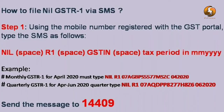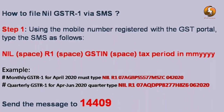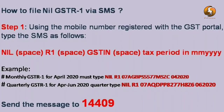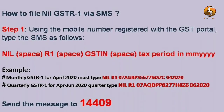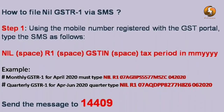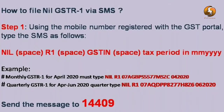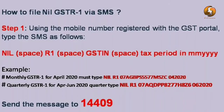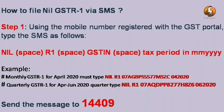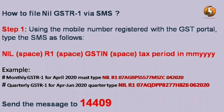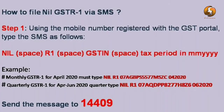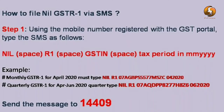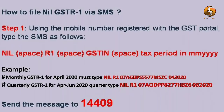For example, for April 2020, type: NIL space R1 space your GST number space 042020. If you want to file quarterly GSTR-1 for April to June 2020, type: NIL space R1 space your GST number space 062020 — that means the last month, June, is represented as 06. Send this message to 14409.